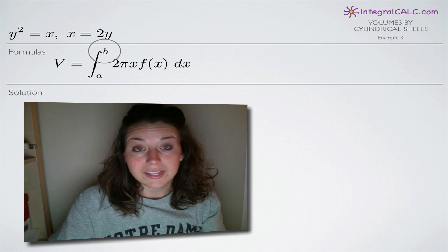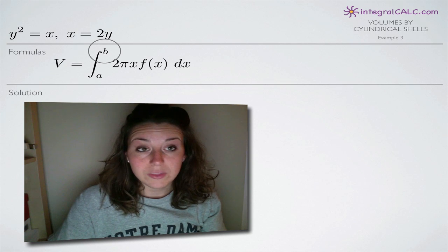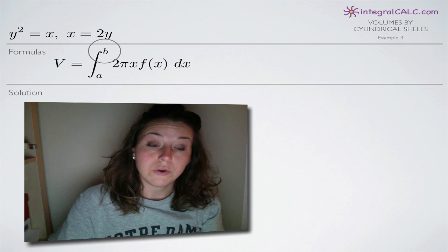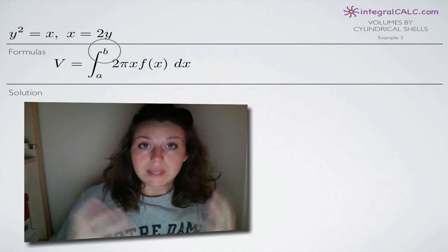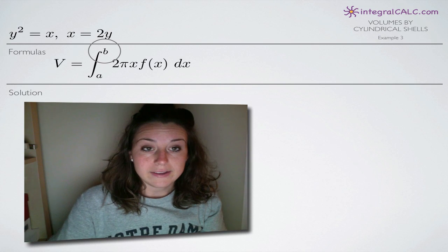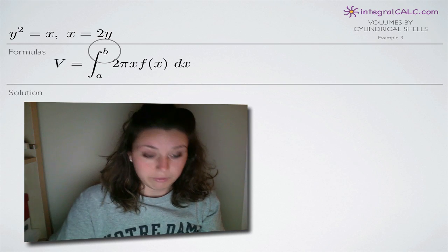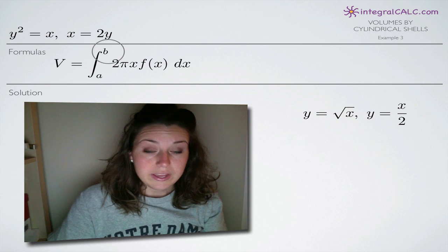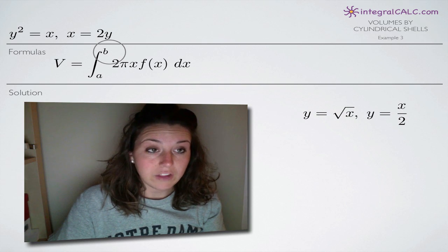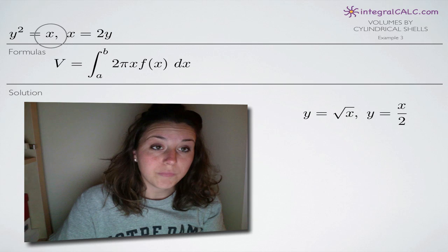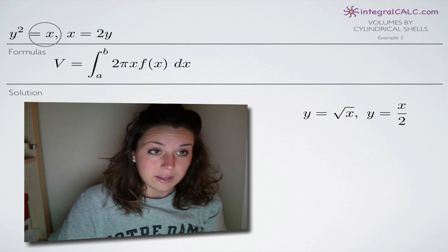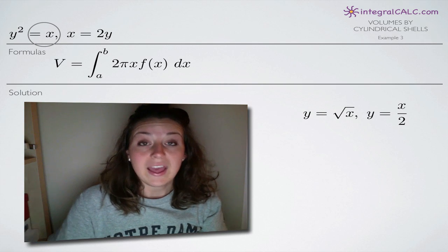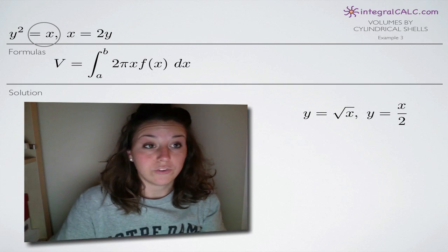But in this case, we're not given a and b, so the first thing that we need to do is find them ourselves. And then once we do, we can plug them in, set up our integral, and we'll be able to simplify and solve. The way that we're going to do that is we're going to solve both of these equations for y and then set them equal to one another.